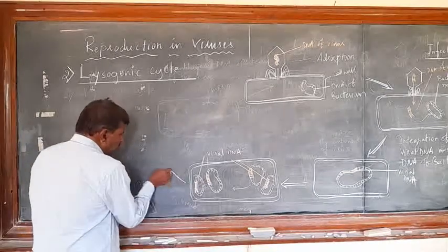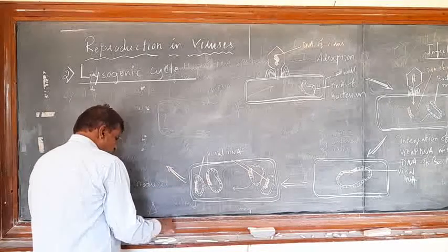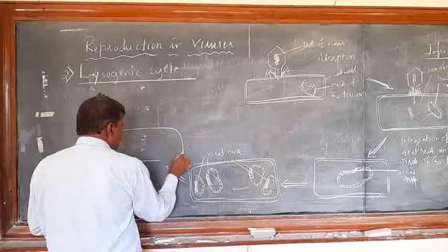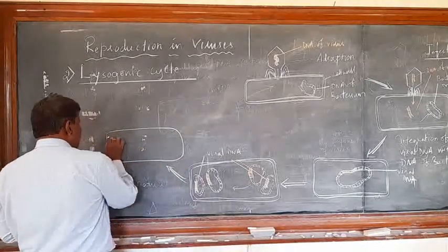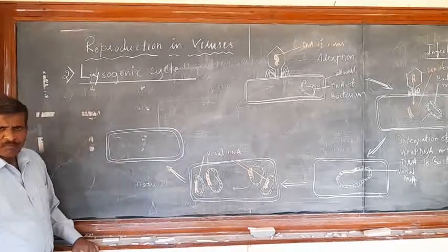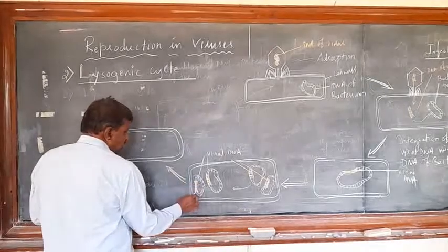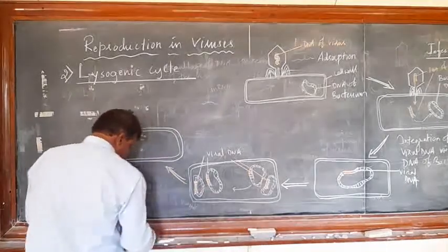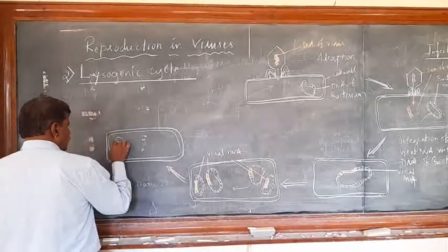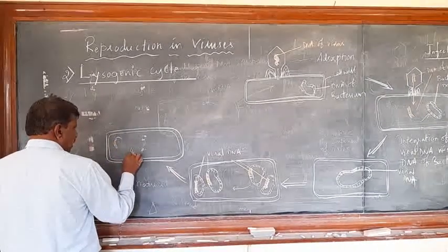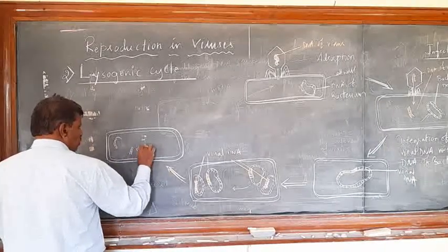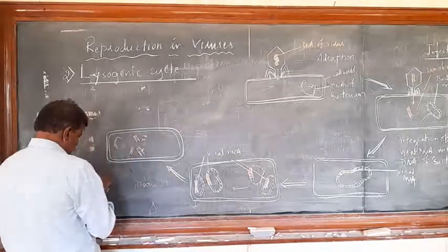What happens is, up to some time, the virus DNA is getting separated from the DNA of the bacteria. Here, maybe three ways occurs. Because of the three ways, the DNA belongs to the virus, getting separated from that of bacterial DNA.